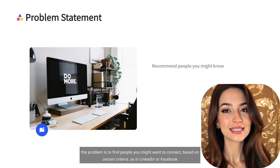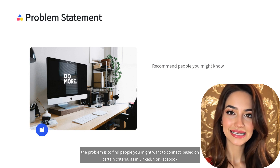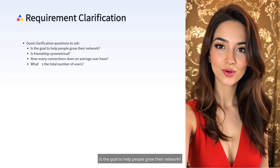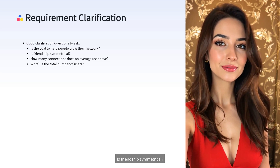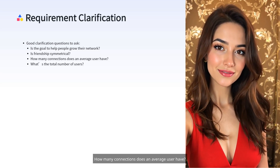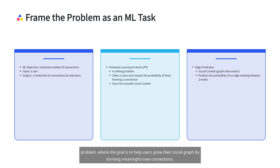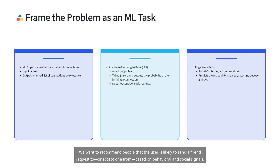The problem is to find people you might want to connect with, as in LinkedIn or Facebook. Here are some good questions to ask in the requirement clarification phase: Is the goal to help people grow their network? Is friendship symmetrical? How many connections does an average user have? What's the total number of users? We frame the people-you-may-know system as a machine learning problem where the goal is to help users grow their social graph by forming meaningful new connections. Our core ML objective is to maximize the number of successful connections made by users — recommending people that the user is likely to send a friend request to, or accept one from, based on behavioral and social signals.